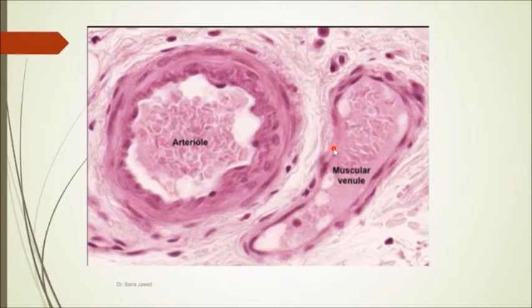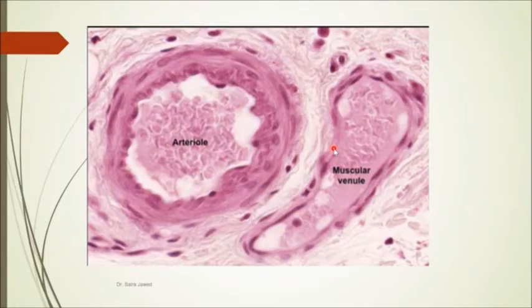For identification points of a vein in a viva or exam: it has a wider but collapsed lumen; the wall is thinner compared to the arteriole; and the tunics — intima, media, and adventitia — are present but less well developed.